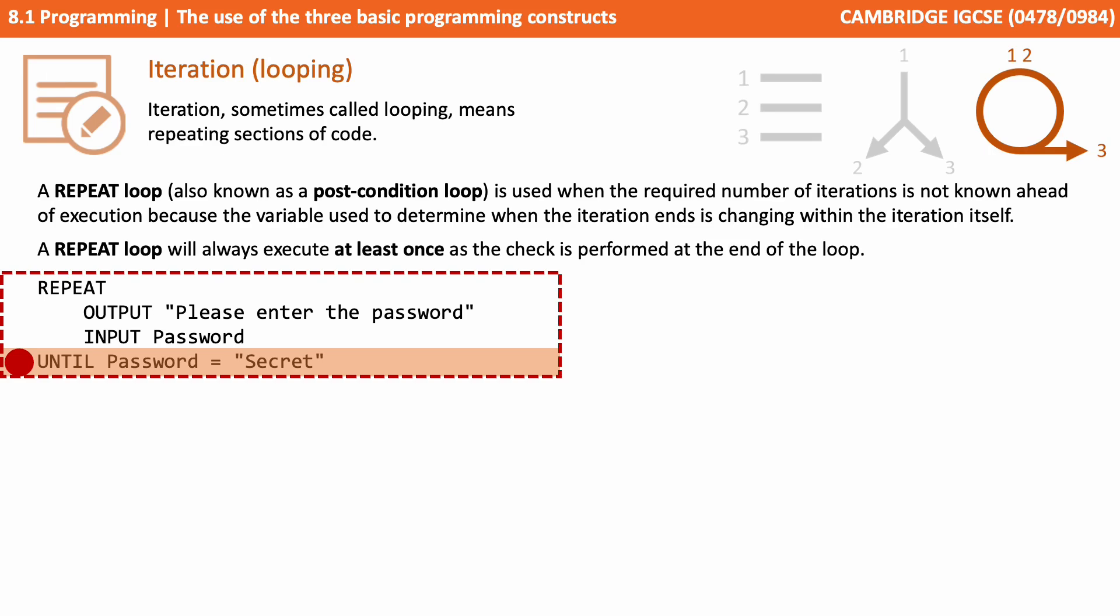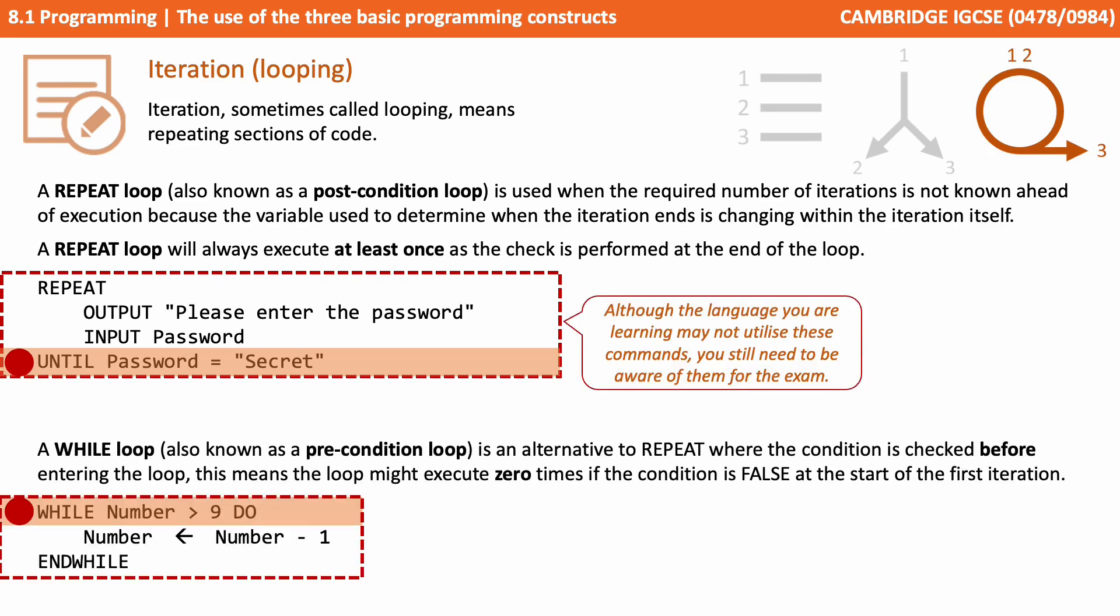A while loop, also known as a pre-condition loop, is an alternative to repeat where the condition is checked before entering the loop. This means the loop might actually execute zero times if the condition is false at the start of the first iteration.